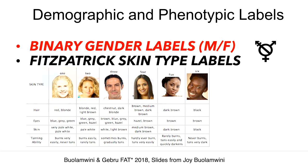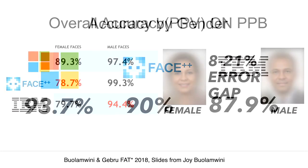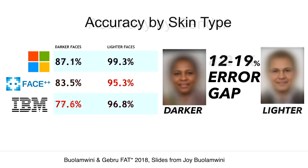So when you look at the overall accuracy of these gender classification systems, they look really high. But then when you break down the accuracy by gender, you can start to see gaps — like 78% there for Face++.